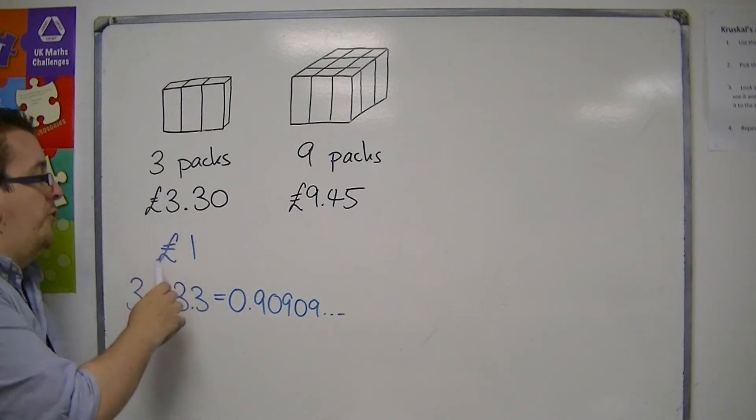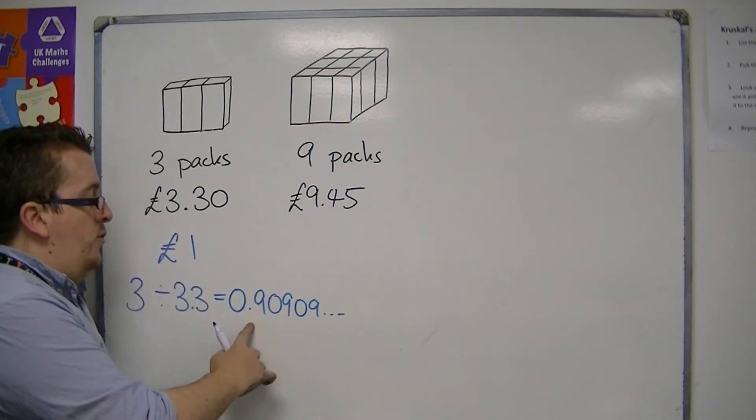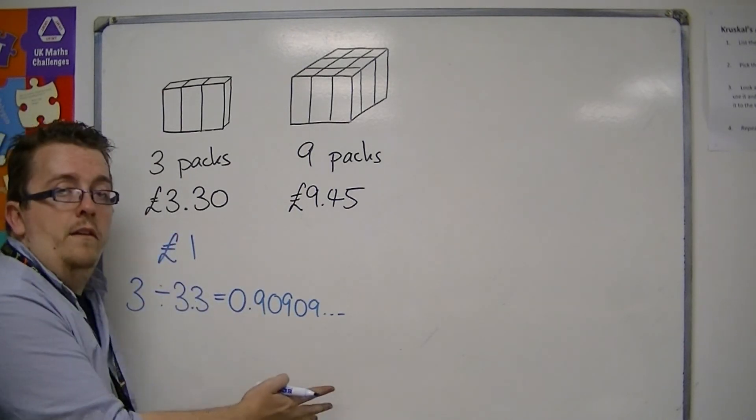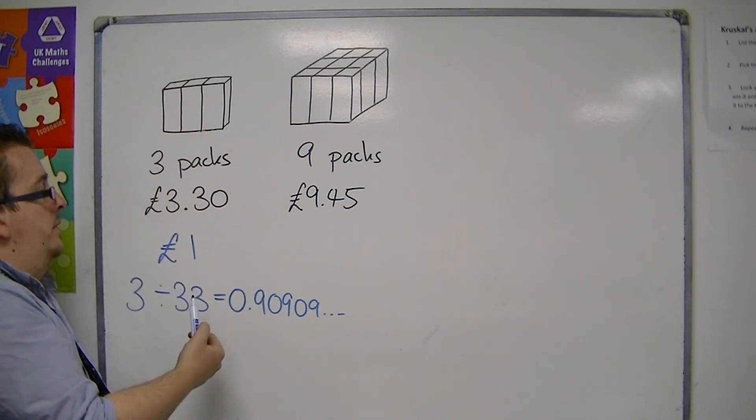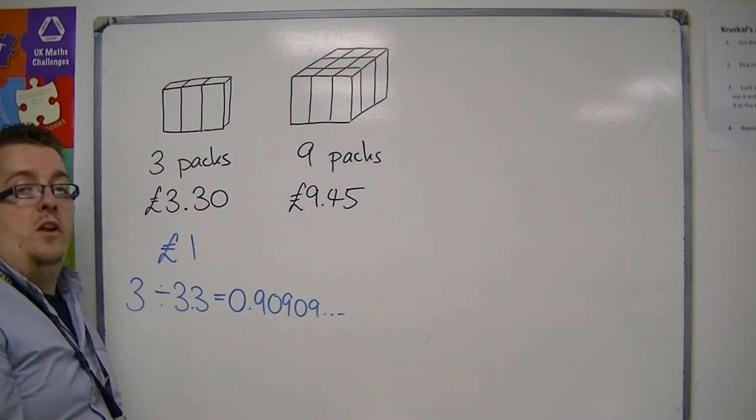So this is telling me that for one pack, I can get 0.91 of a pack. So one pound will get me 0.91 of a pack.